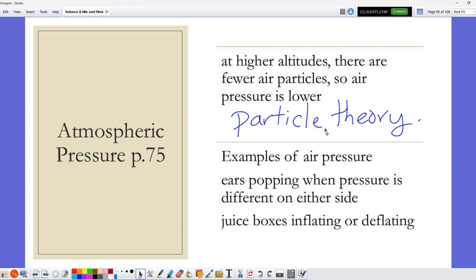Examples of air pressure: your ears pop when the pressure is different on either side. If you go up in a plane or in a fast elevator, you'll feel that when you're coming back down. You yawn or chew gum, and that's a way of reducing pressure. Same thing in a juice box. When you're drinking from a juice box, it crushes because the pressure outside is higher than inside. When you take your tongue off the straw, it re-inflates because it's equalizing the pressure again.